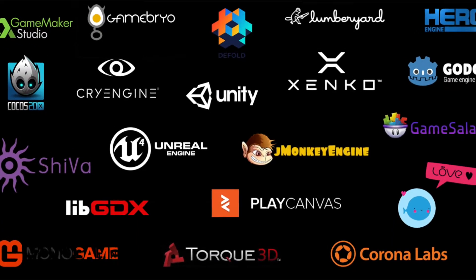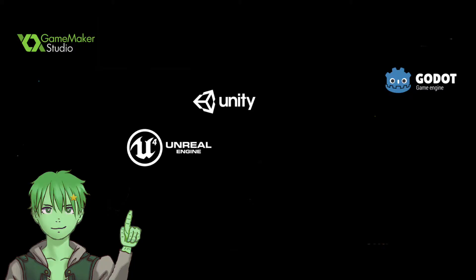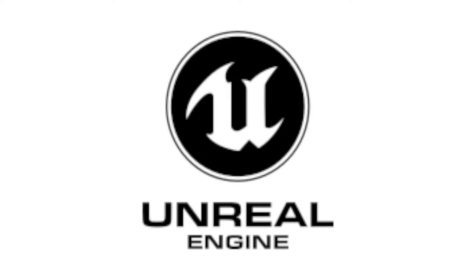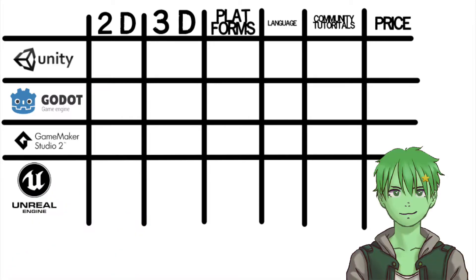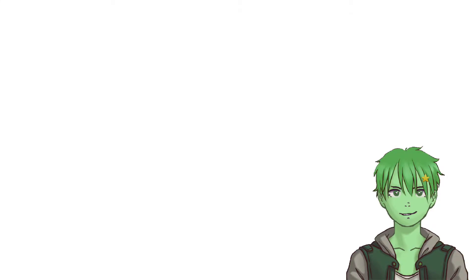So you're not sure what game engine you should pick? Then this video is for you. Today we're going to compare the most popular game engines: Unity, Unreal, Godot, and GameMaker. We'll be looking at whether the game engine supports 2D and 3D, which platforms you can export your game to, what language you use to code your games, the amount of tutorials, and the price of the game engine.